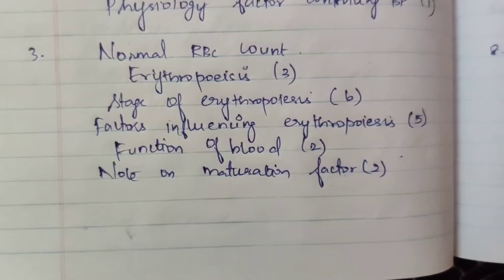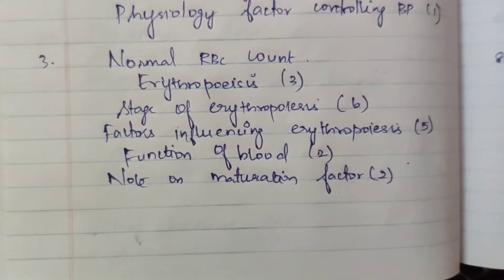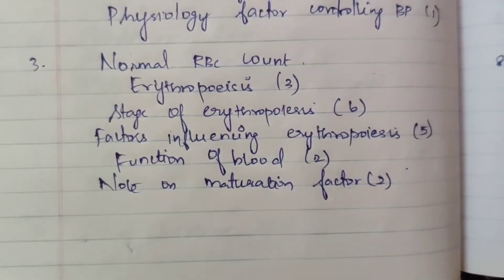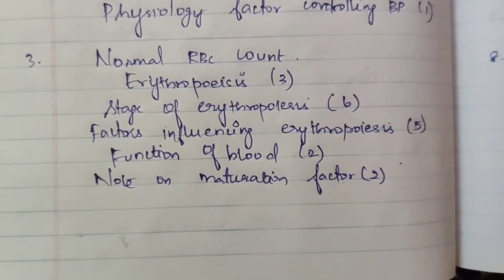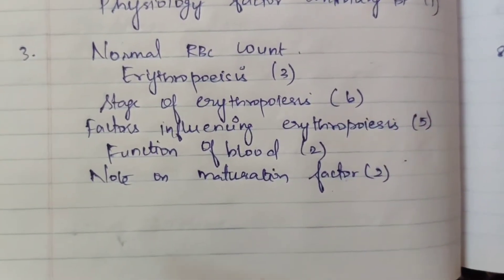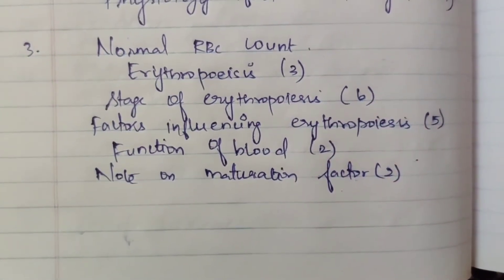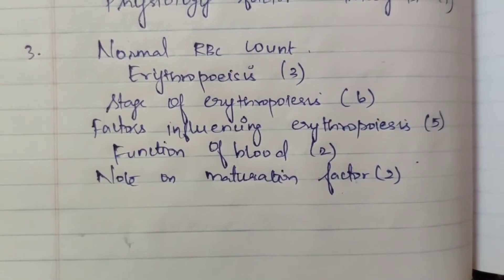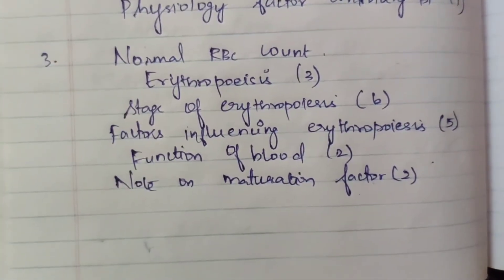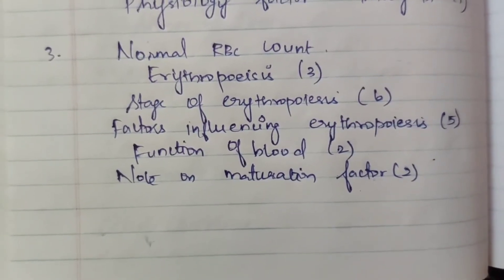Third question: normal RBC count. Erythropoiesis appears three times. Stages of erythropoiesis appears six times at 15 marks — these are very important questions. Factors influencing erythropoiesis appears five times. Function of blood appears two times. Note on maturation factor appears two times. These are all within the erythropoiesis and blood topic.